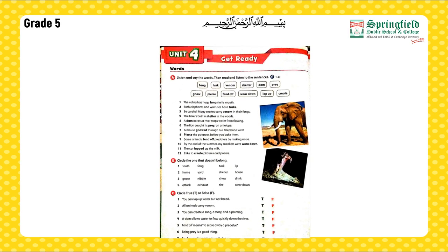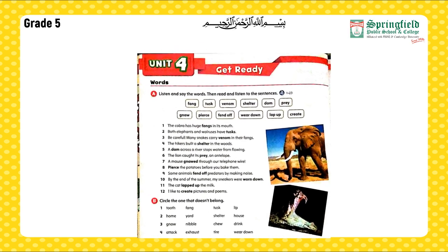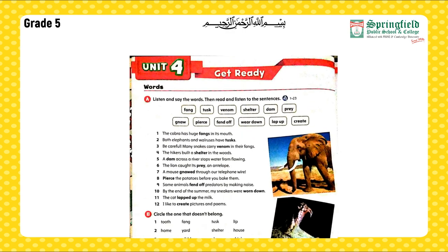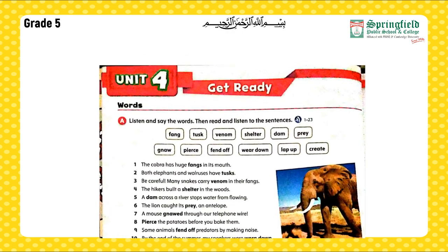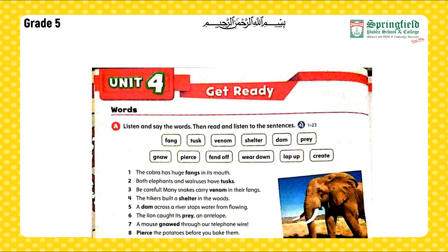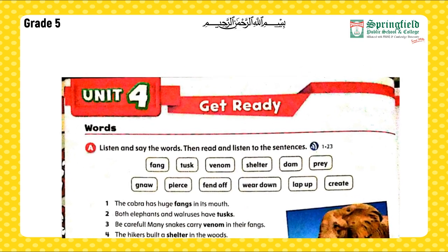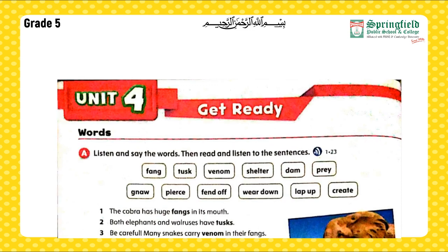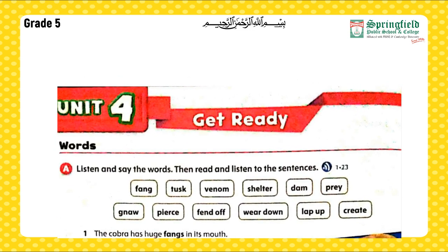I hope you listened carefully and enjoyed it too. Now I'm going to read the sight words and some important words from the text, which you will circle in your books. Repeat after me. Words: fang, tusk, venom, shelter.